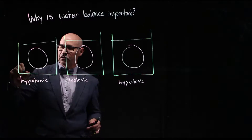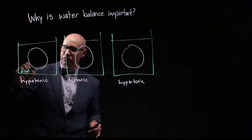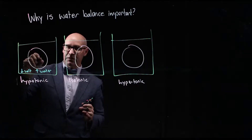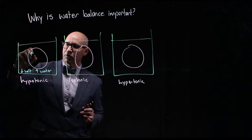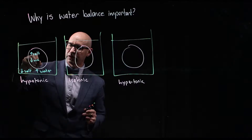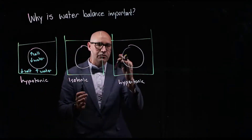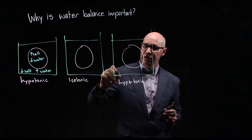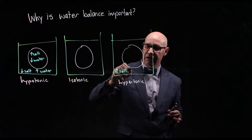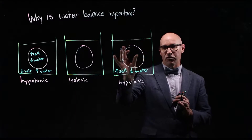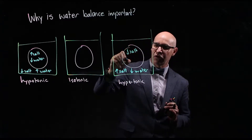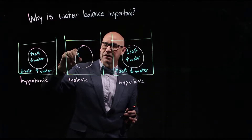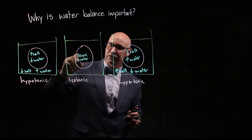Hypotonic means we've got low salt or low solute and high water in the solution outside of the cells. So that means inside the cells, we have got relatively higher salt and lower water. Hypertonic means high solute, so high salt in the solution around — high salt and low water — and the opposite inside: low salt and high water. Isotonic is the same — the same water and the same salt.